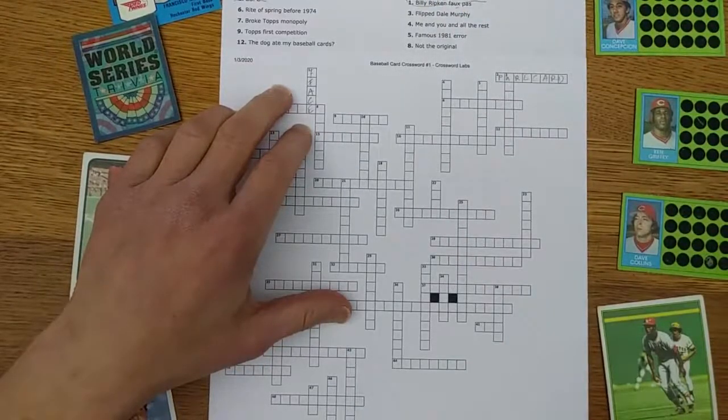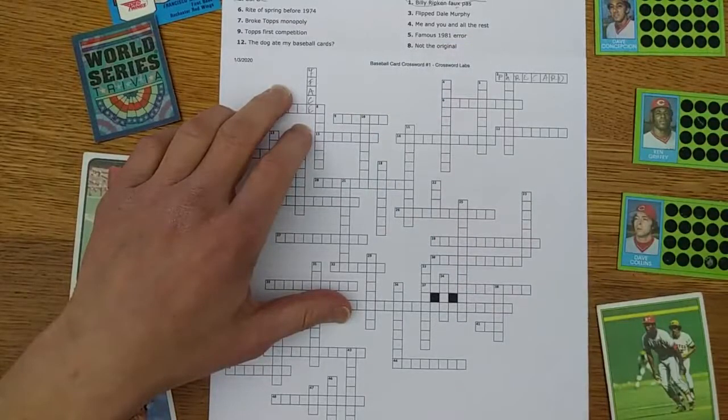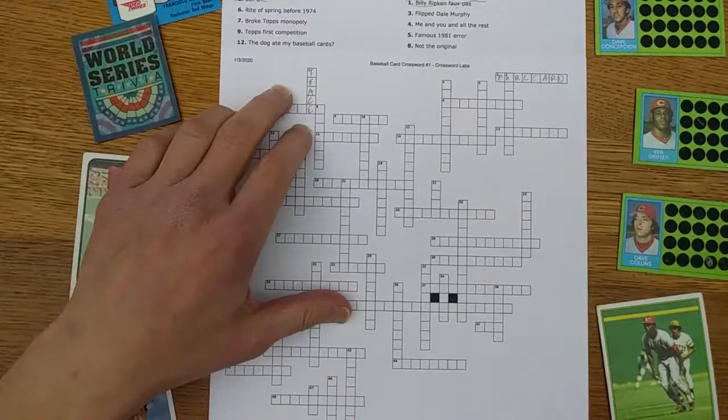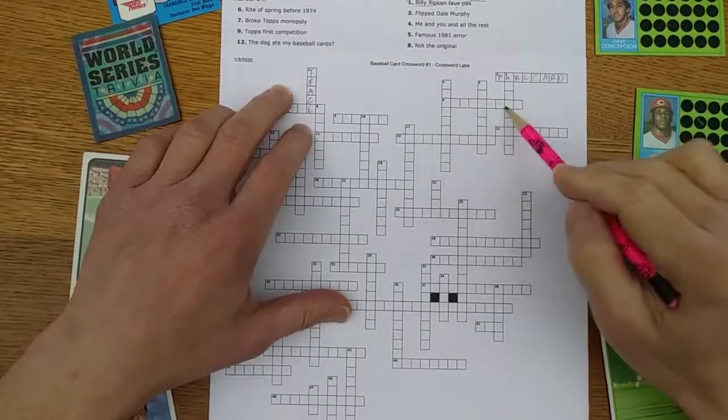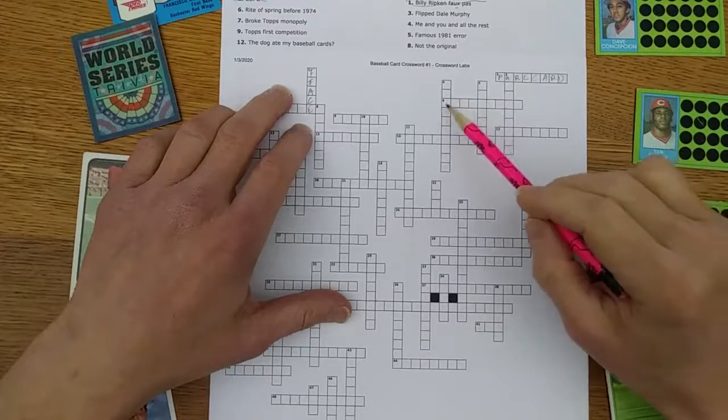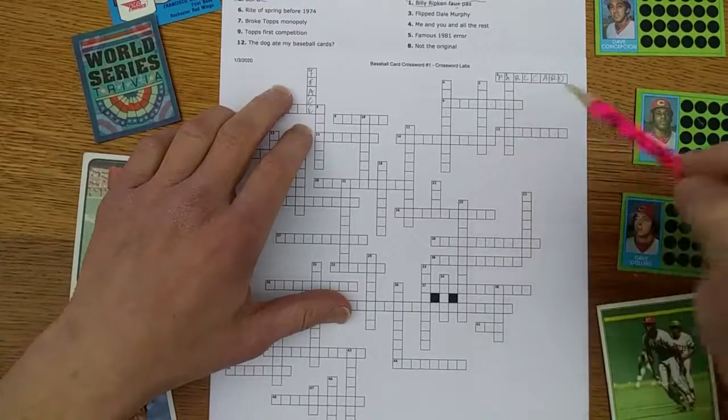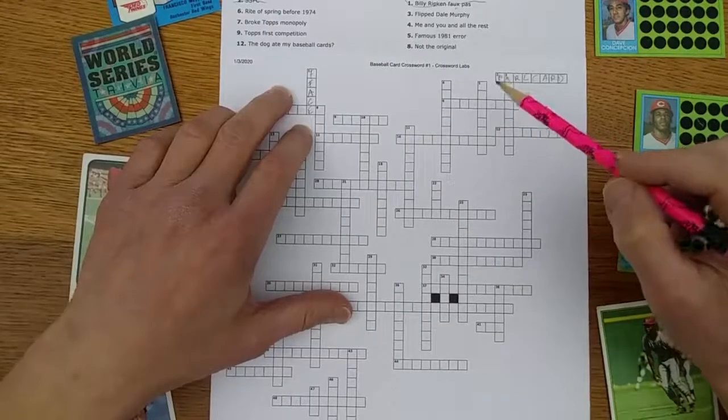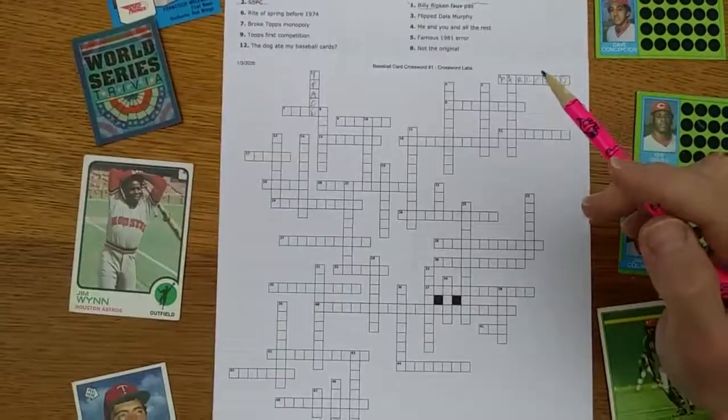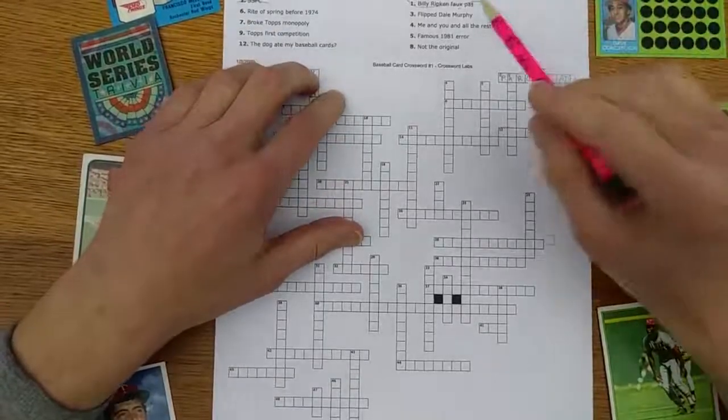A rite of spring before 1974. Before 1974, baseball cards were issued in series rather than all at once, so this must have something to do with series. Could it be series one? S-E-R-I-E-S-O. Let's go on and see if we can get some more clues to that one. I've stumped myself a little bit already here.